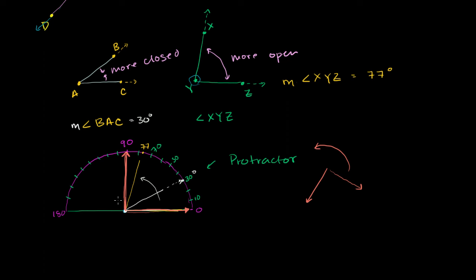There's a special word for a 90-degree angle: it is called a right angle. If you rotate it, it would look just like this, and we call this a right angle. There is a notation to show it's a right angle — you draw a little part of a box right over there, and that tells us that one ray is going exactly up and down while the other is going exactly right and left.